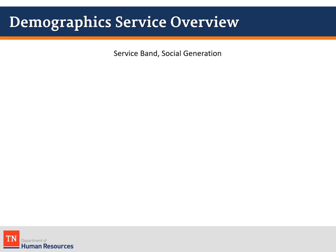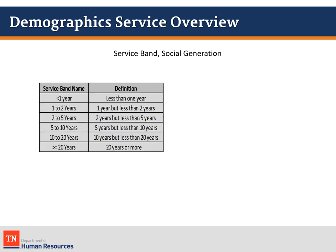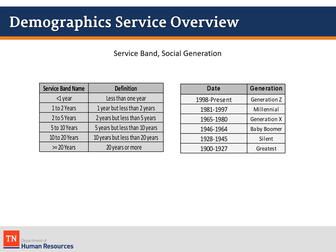The data in this report cross-references years of service, called service bands, and social generation data. There are six service bands. This chart shows the category title on the left and the years of service that falls within that category on the right. Generation calculations using the employee's date of birth are calculated based on the Pew Research Center generation definitions. The state of Tennessee began using the definitions from Pew in 2015.